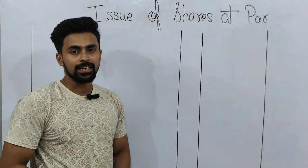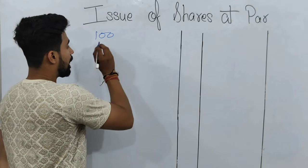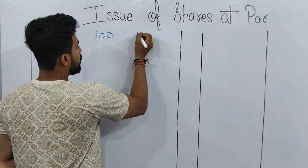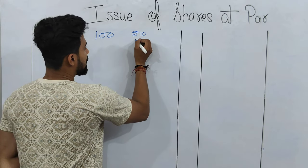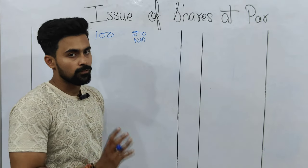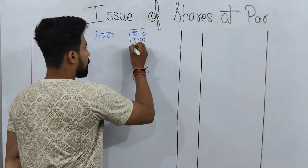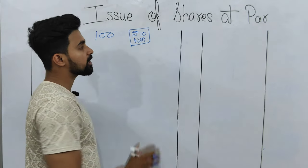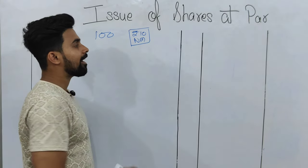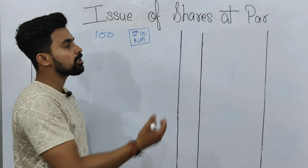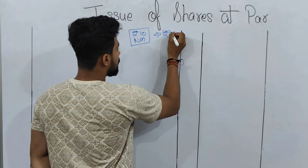Starting from the first case — issue of shares at par. Before understanding this, let's take a case. Suppose a company has 100 shares and the value of each share is Rs. 10. That Rs. 10 is the nominal value of the share. Issue of shares at par happens when a company issues shares at an amount equal to the nominal value — that means they are issuing shares at Rs. 10.